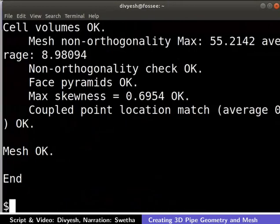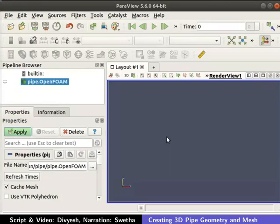To view mesh in ParaView, type paraFoam and press enter. Click on Apply on the left side of your window in the Properties tab.